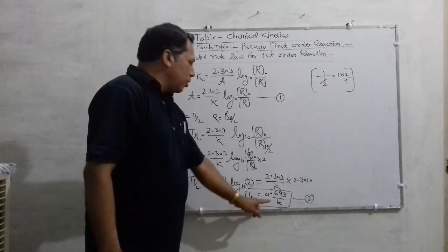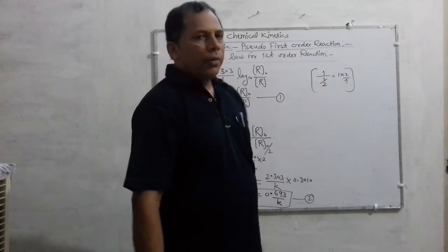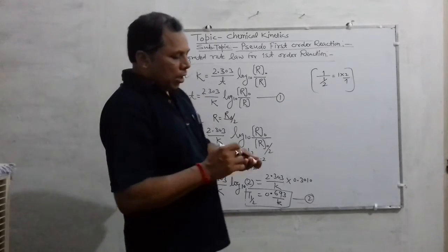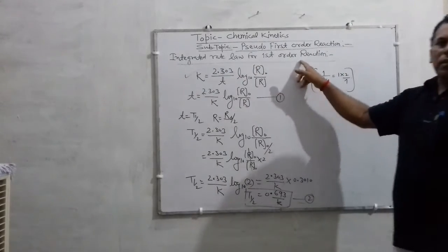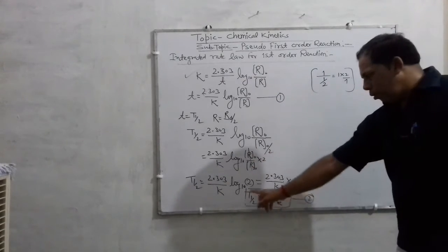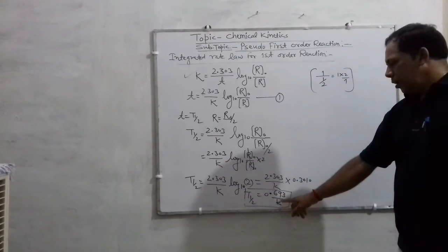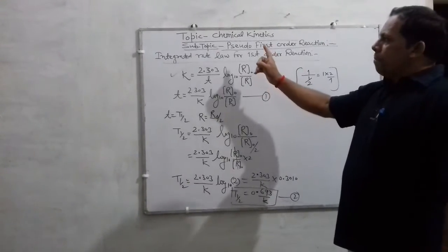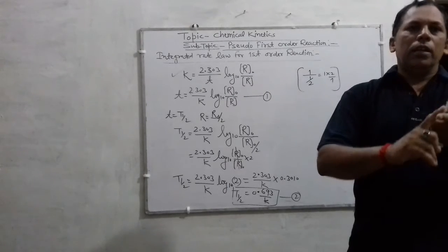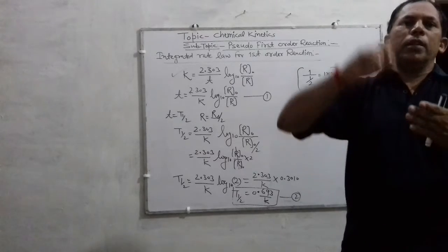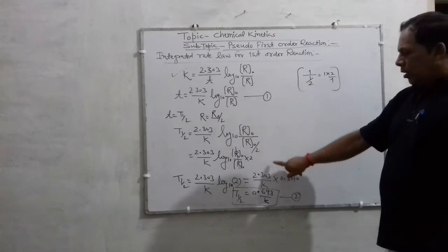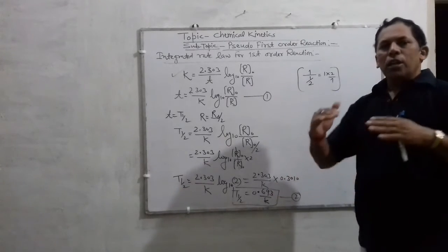In the case of zero order, the half-life period is completely dependent upon the concentration of the reactant and is inversely proportional to the rate constant. But here, in the case of first order, the meaning is completely different. You must remember this formula showing the relationship, so that you can solve the numericals given in your book.